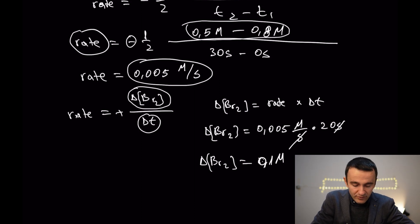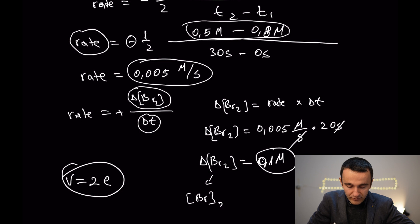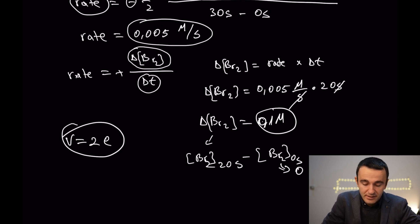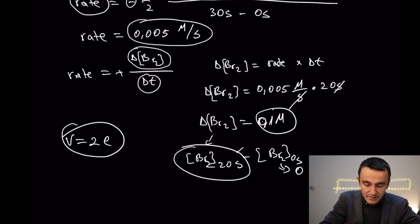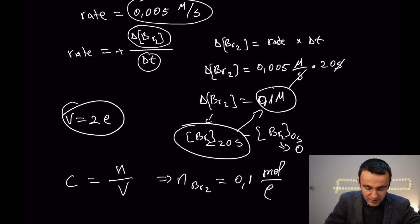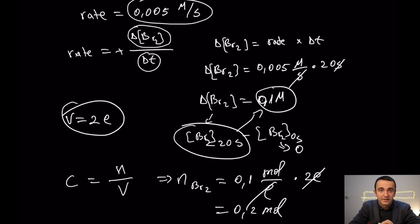Now we want the number of moles. We have the number of moles of bromine, and the volume of the container is 2 liters. This 2-liter container contains 0.1 molar concentration of bromine. Be careful: this is the concentration of bromine at 20 seconds minus the concentration at 0 seconds. At 0 seconds, bromine is a product and the reaction has not yet proceeded, so its initial concentration is 0. The only thing that remains is the concentration after 20 seconds, which is 0.1 molar. Since concentration equals moles divided by volume, the number of moles of bromine equals 0.1 mol per liter multiplied by 2 liters, giving 0.2 mol. This is the number of moles of bromine formed after 20 seconds.